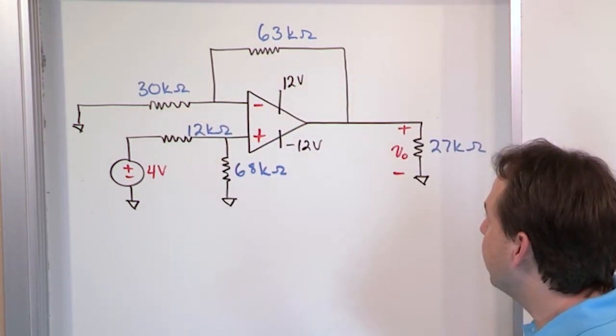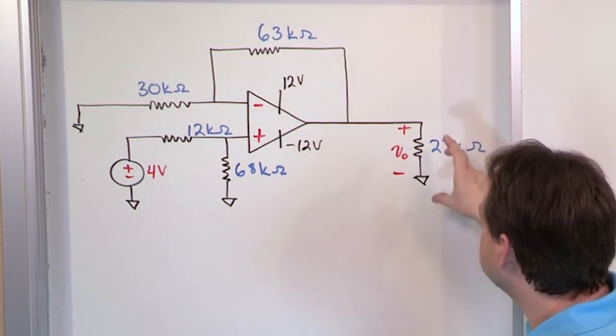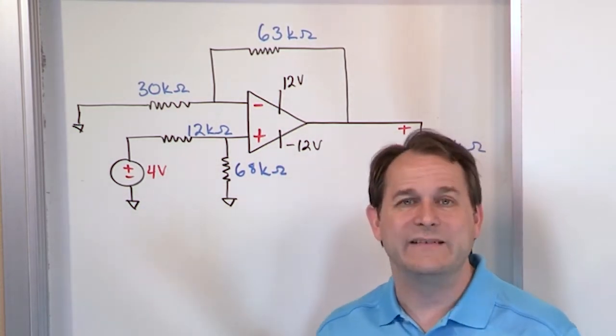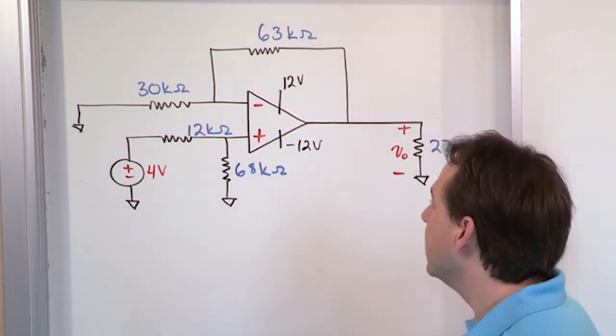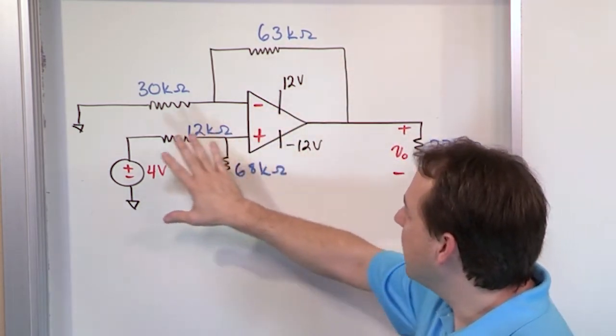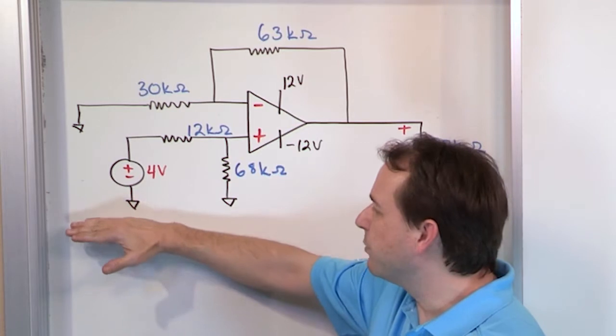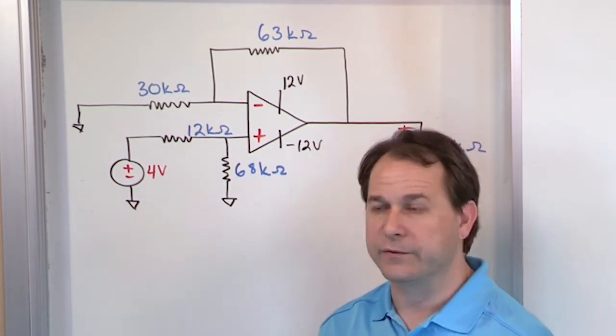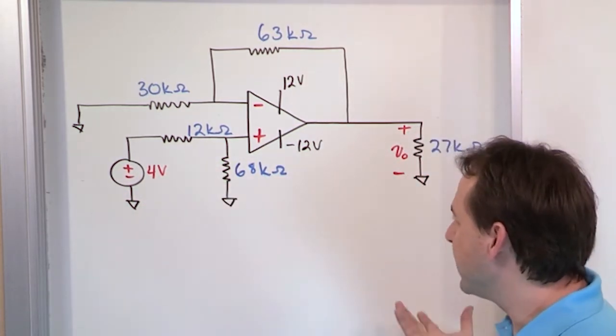And then we have to figure out what to multiply that gain by because ultimately we're trying to find out what is the output voltage. That's all we're trying to do. So when you find that gain, you have to multiply by the input signal.